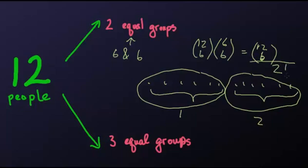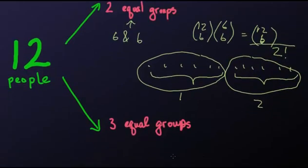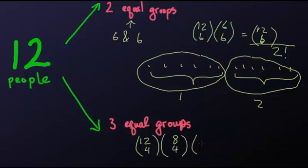I'm going to write this as two factorial, and you'll see why. How many ways can we split twelve people into three equal groups? Three equal groups means there are four people in each group. We start with C(12,4), then after choosing the first four people, we choose the next four: C(8,4). After that, we choose the third group of four: C(4,4). So it seems like there are C(12,4) times C(8,4) times C(4,4) ways to make three equal groups.